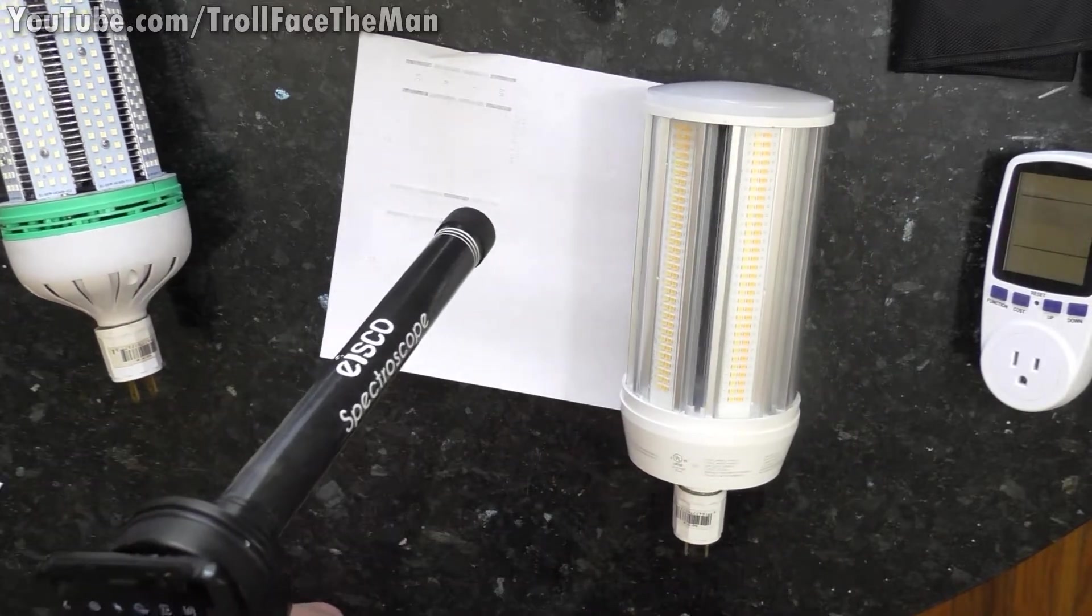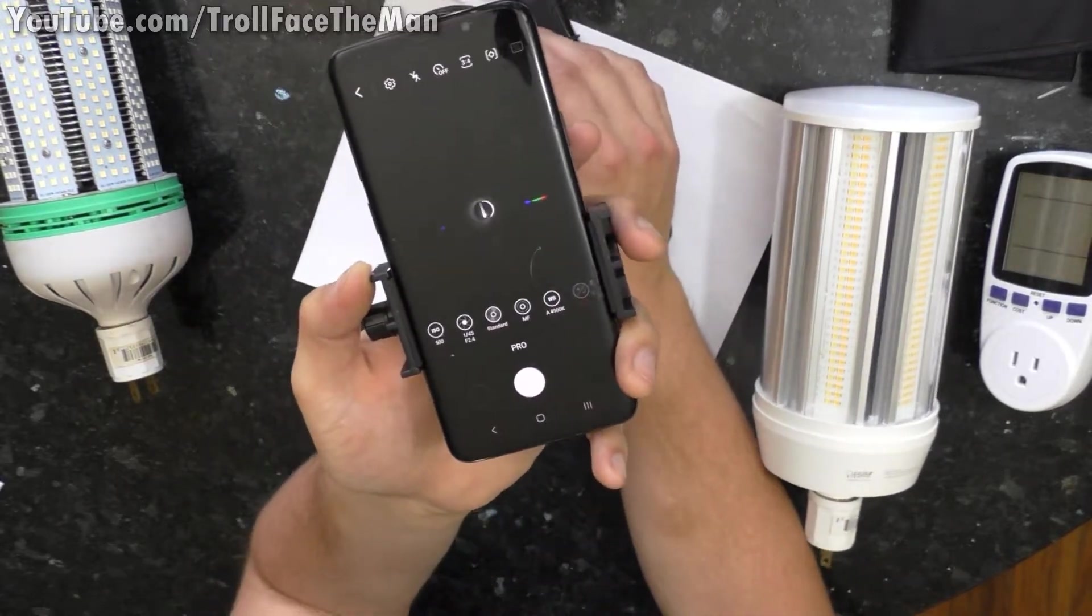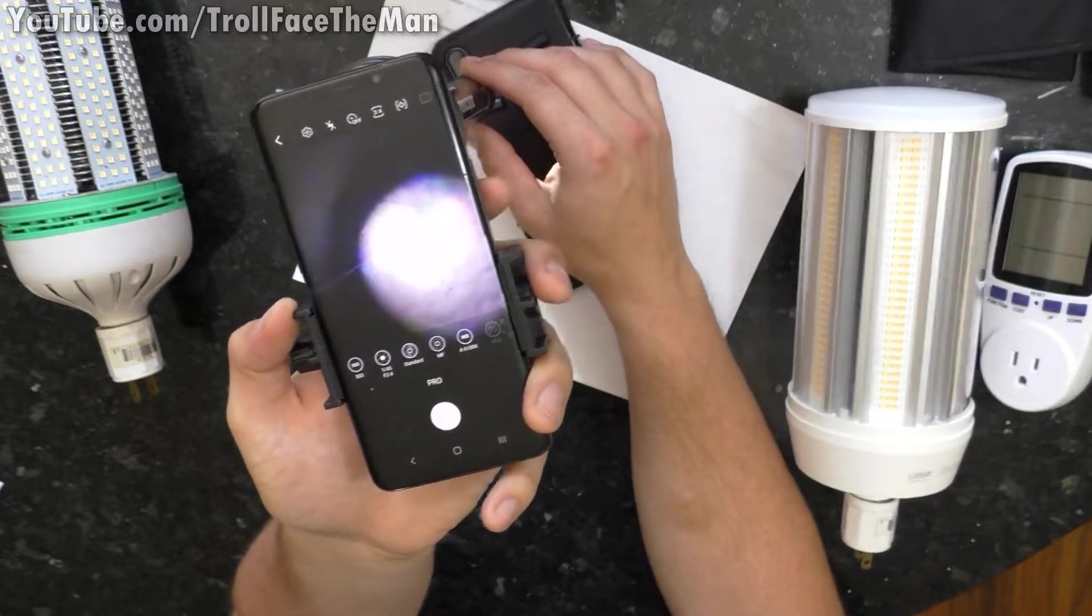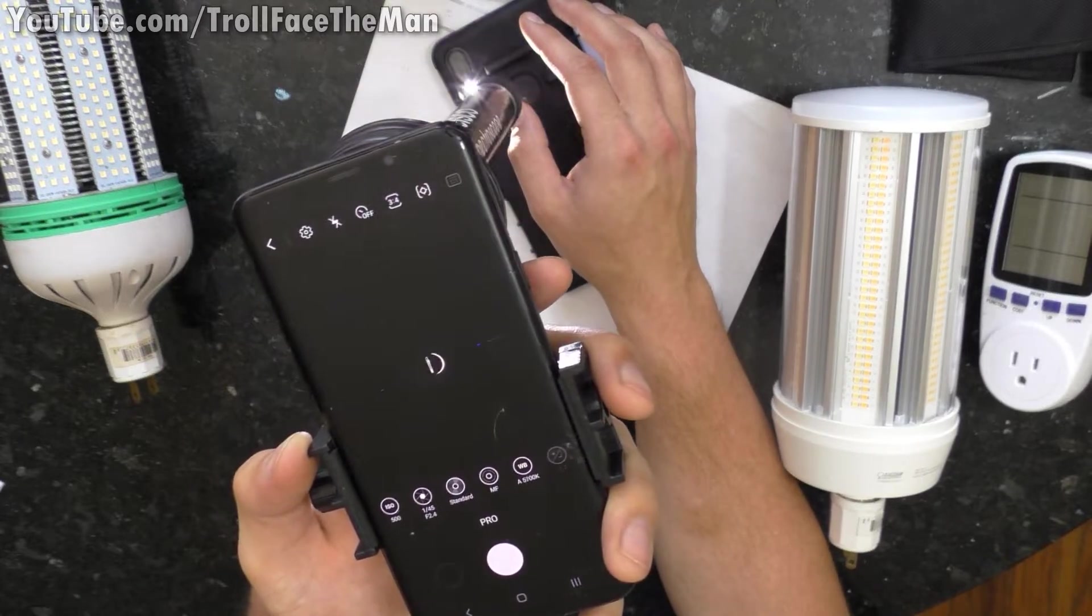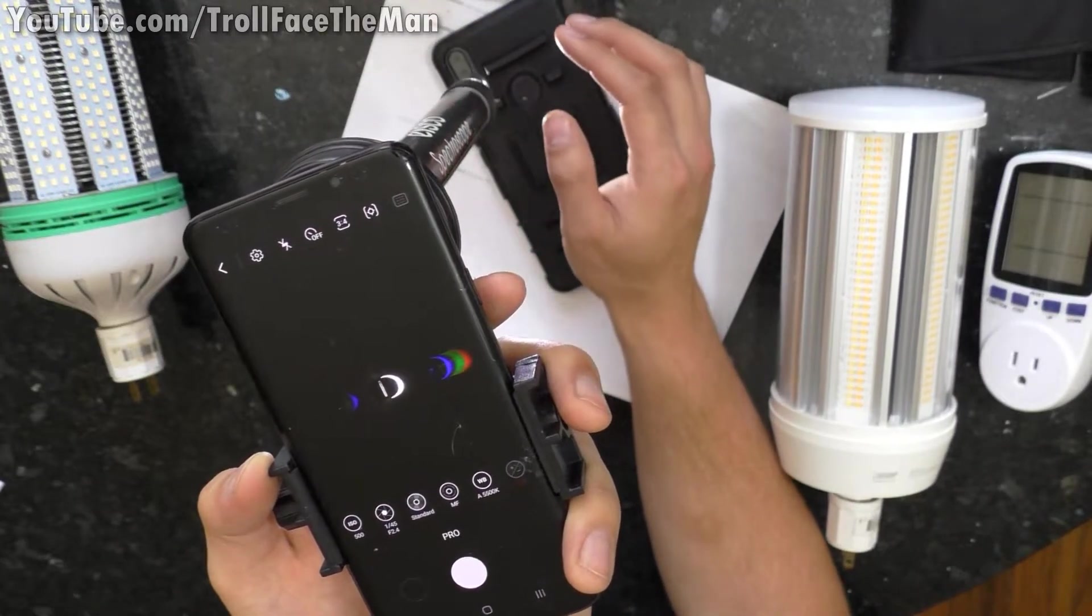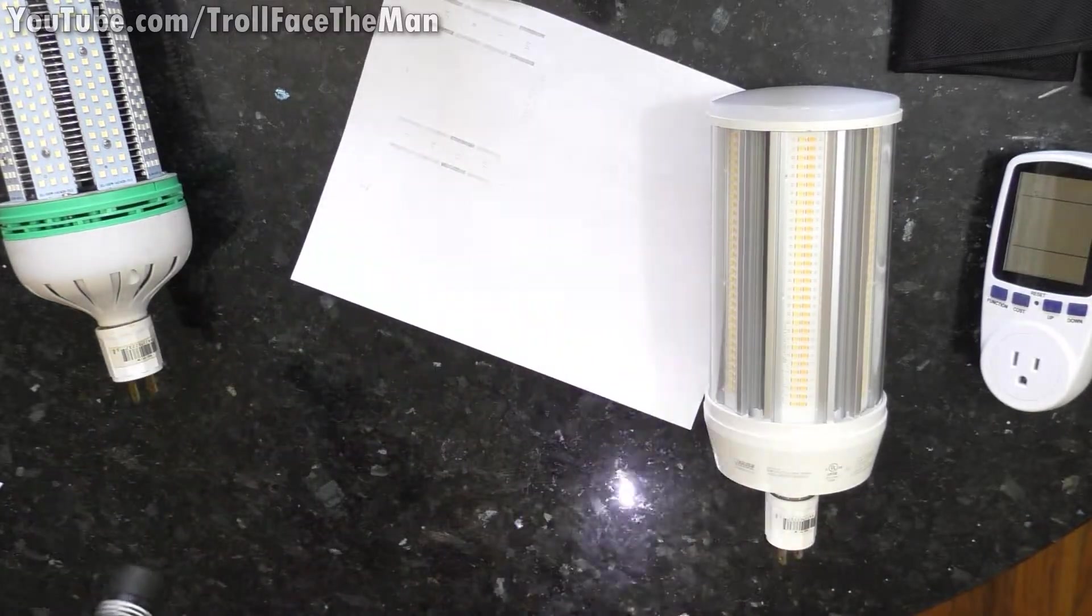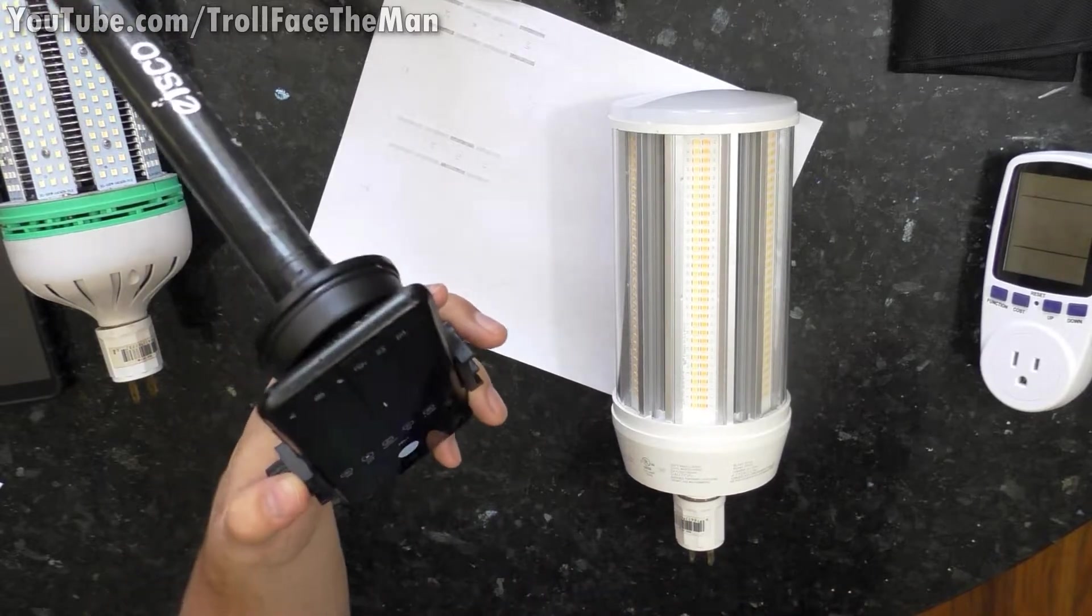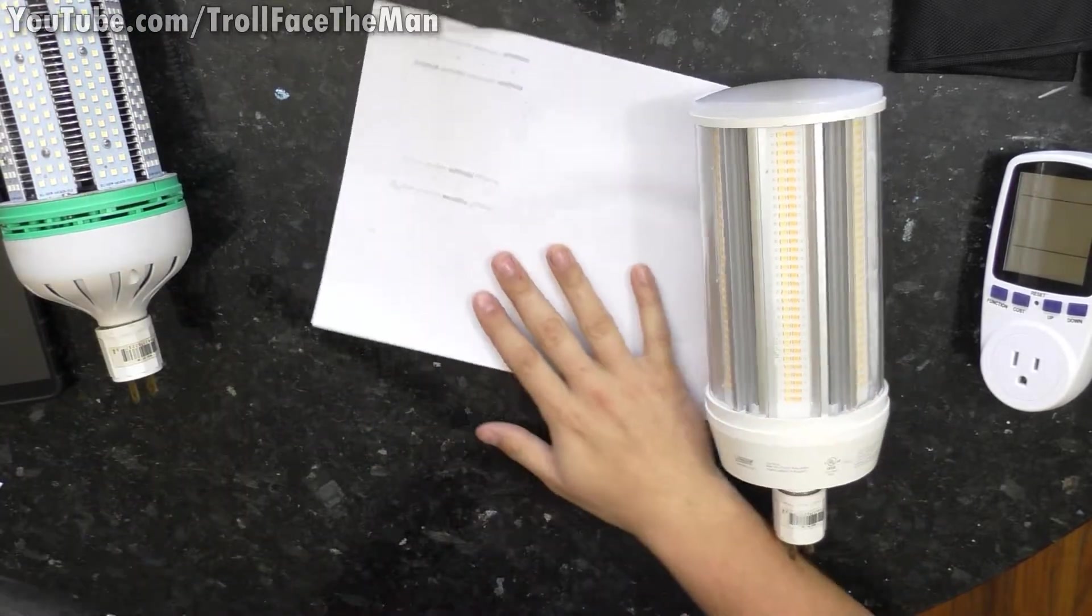And if I were to do something like shine a light through here, you can see, it's not going to do great because it's so close, but they're kind of the rainbows on the edge forming there, which will show me the color spectra.